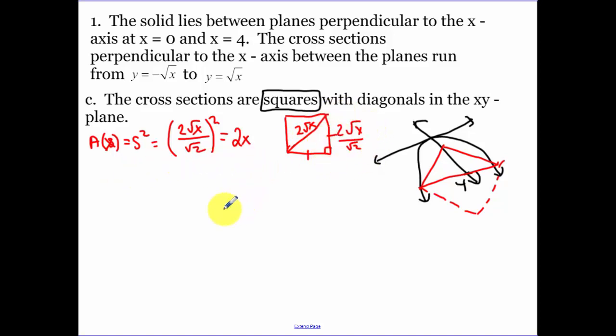I didn't worry about simplifying because I knew when I was going to square my side, that would take care of all my radicals. I'm summing up all of my areas from zero to four of all of our squares, where the formula is 2x dx. From there, we get x squared from zero to four, and I get my volume is 16.